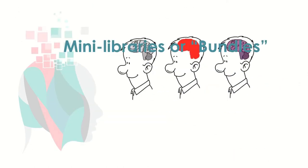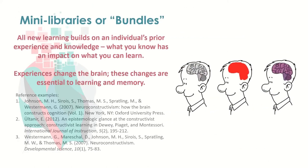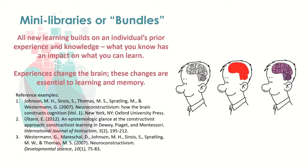Instead of using a textbook or a single resource for the course, each unit is accompanied by one or more bundles or mini libraries. These bundles consist of links to journal articles, videos, podcasts, websites, and other resources with varying levels of complexity and difficulty. These bundles permit students to have multiple entry points to the same topic, meaning the same course can have master level students as well as undergraduates as well as non-credit students in the same room.